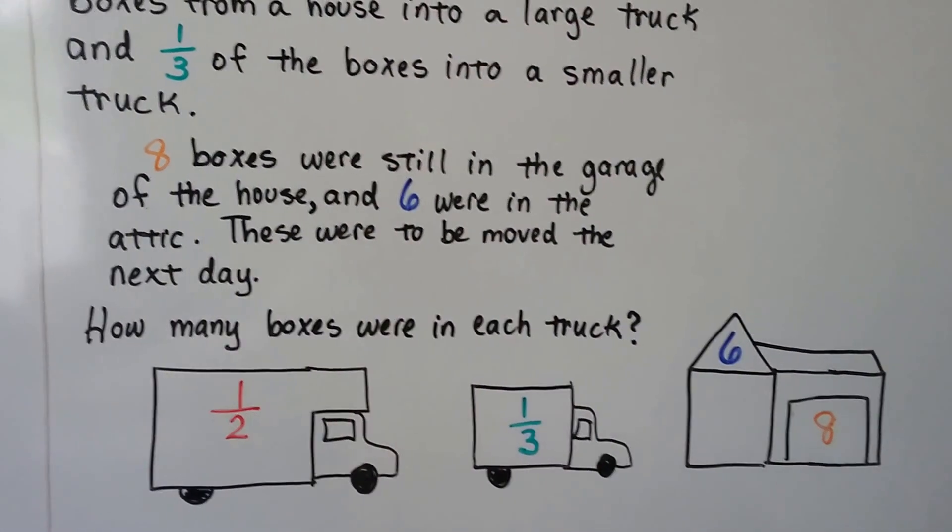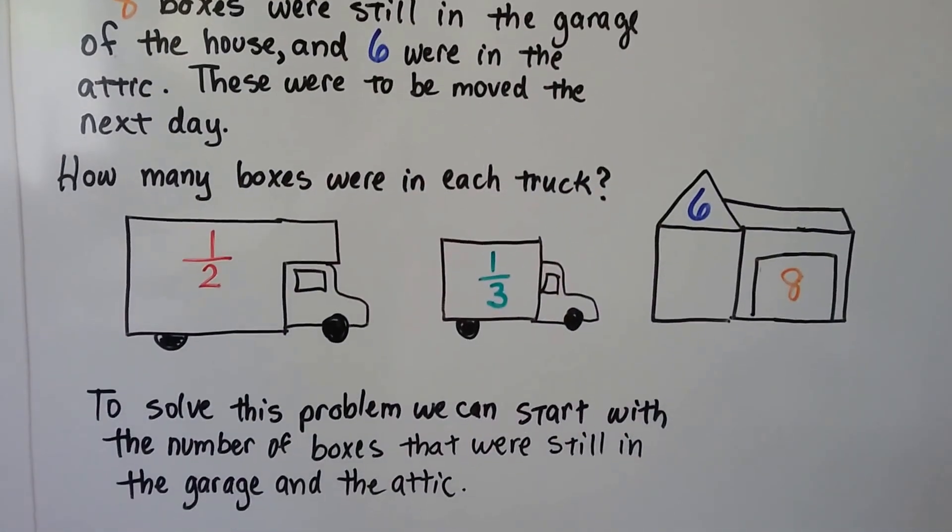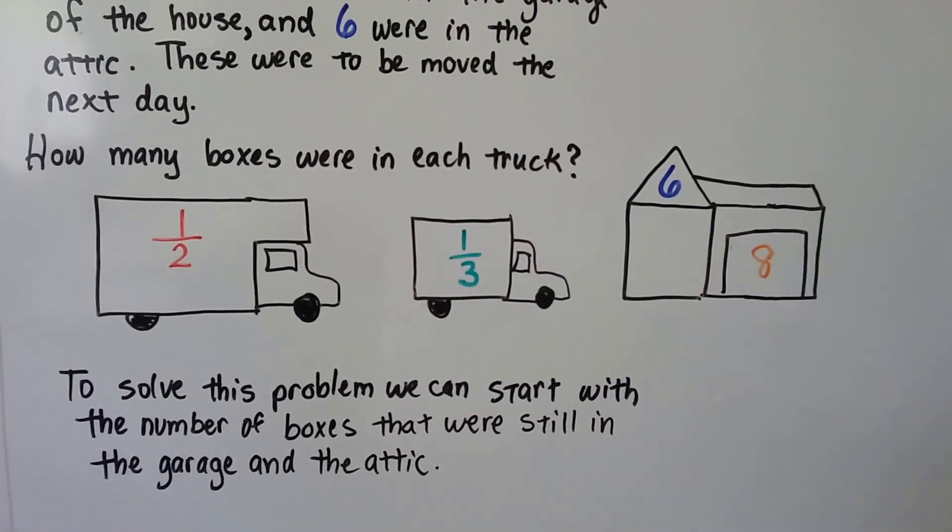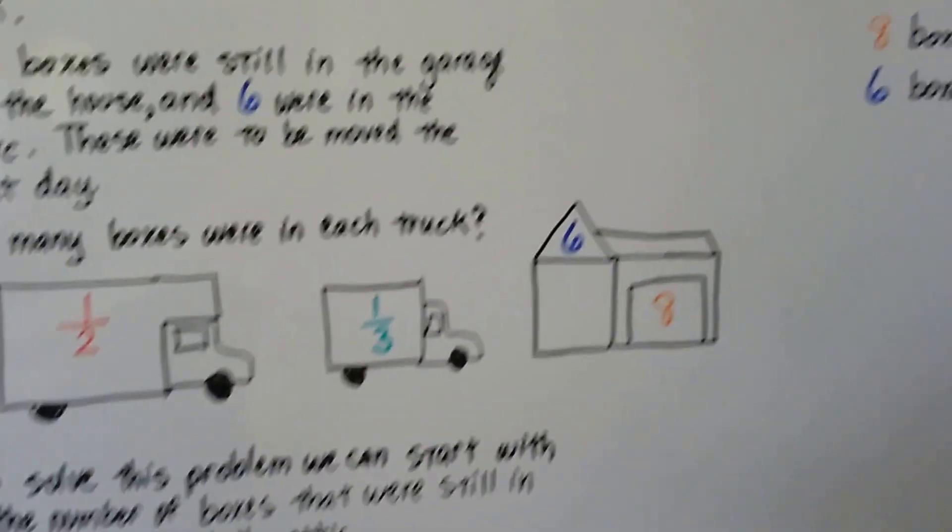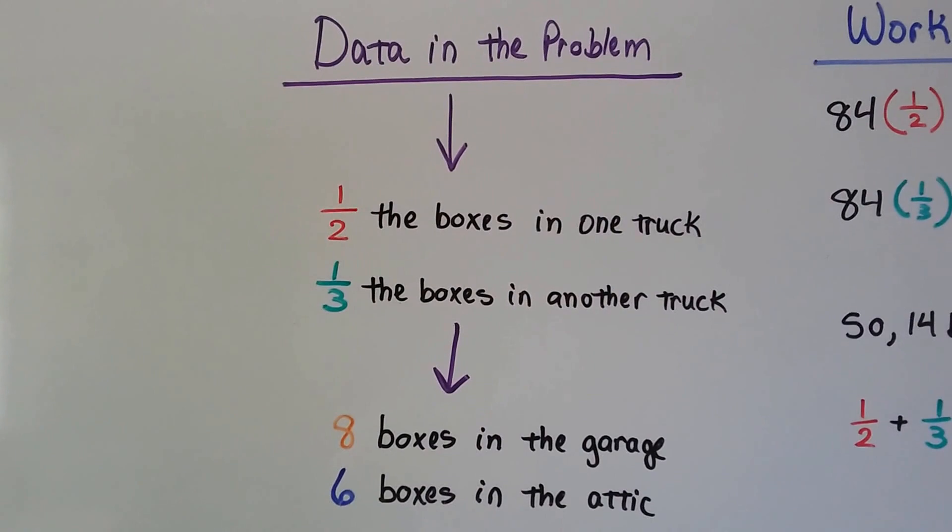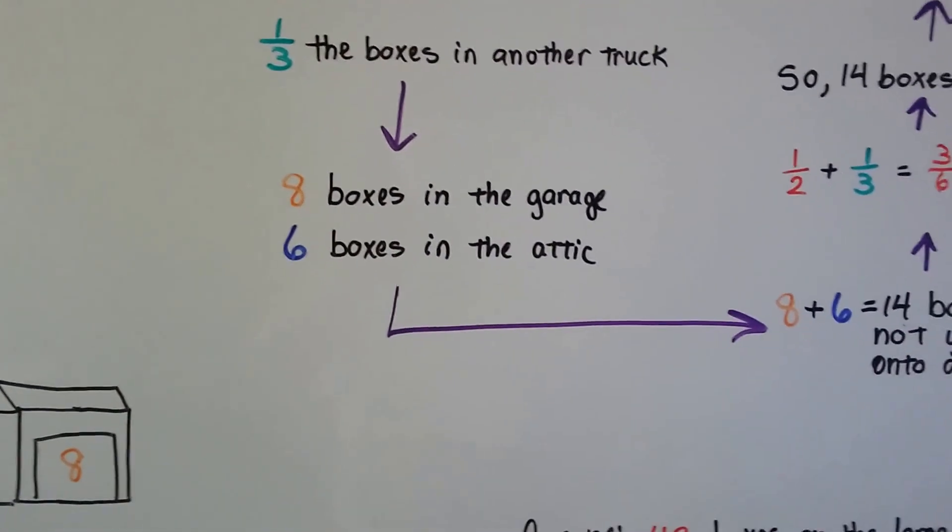We've got half of them in the large one, one-third of them in the small one, six in the attic, eight in the garage. Now to solve this problem, we can start with the number of boxes that were still in the garage and the attic. We start by listing all the data from the problem. Half of the boxes in one, one-third of the boxes in another truck, eight in the garage, six in the attic, and we'll work backwards.